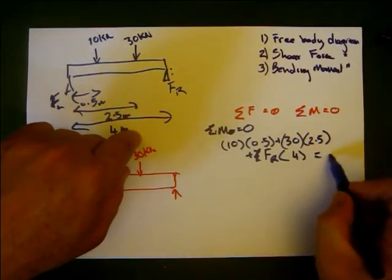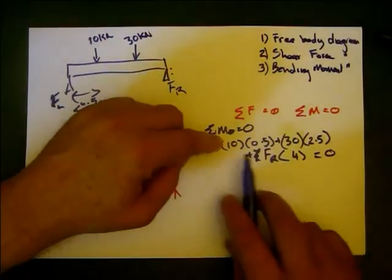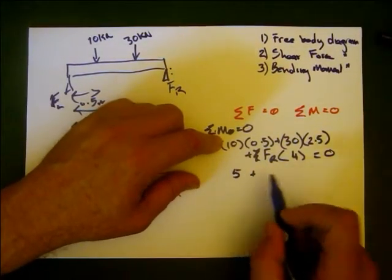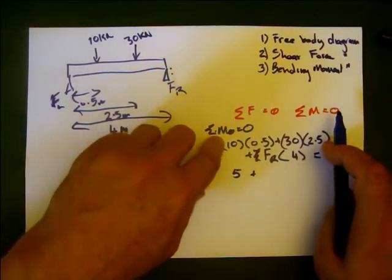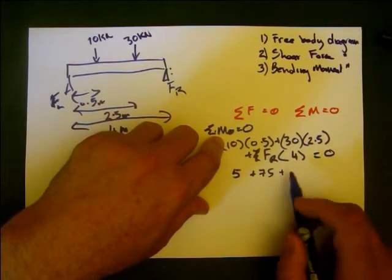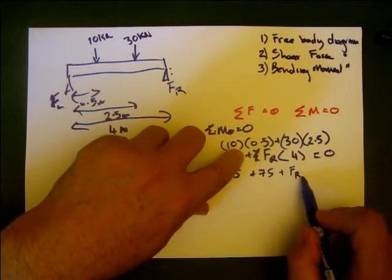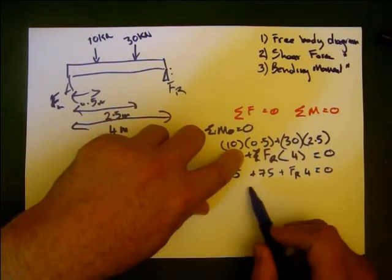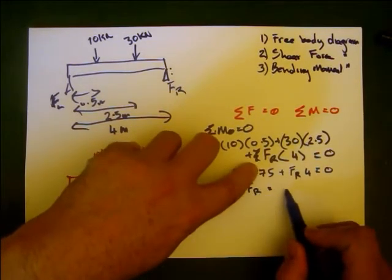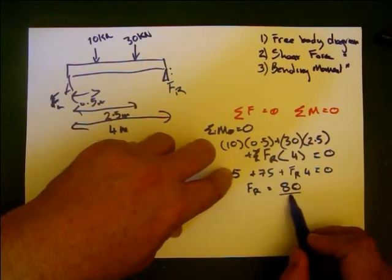So we can rearrange this: 5 plus 30 times 2.5 is 75, plus force right times 4 equals 0. So force right equals negative 80, that's 5 plus 75, over 4.